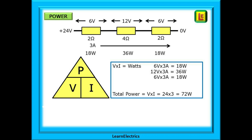The total power in the circuit is the addition of all these values, which is 72 watts. We can verify this is correct by multiplying the total circuit voltage by the total current: 24 volts times three amps is 72 watts.